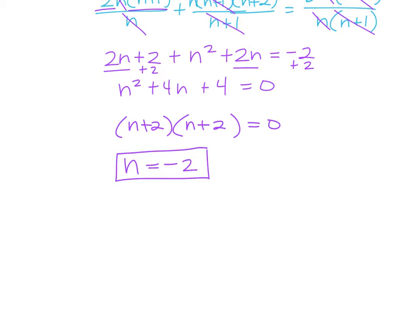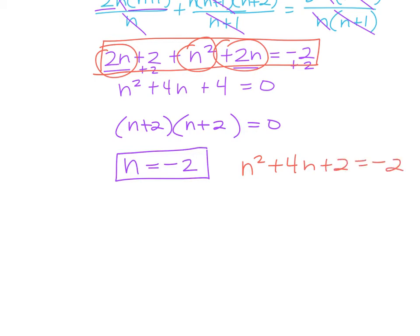So I took this, right? And I simplified. So I have an n squared on the left. I have a 2n plus a 2n, so plus 4n. And right now I have a plus 2 over there, and it's equal to negative 2. Right? That's on this side. So I just added 2 to both sides. So I get n squared plus 4n plus 4 equals 0.